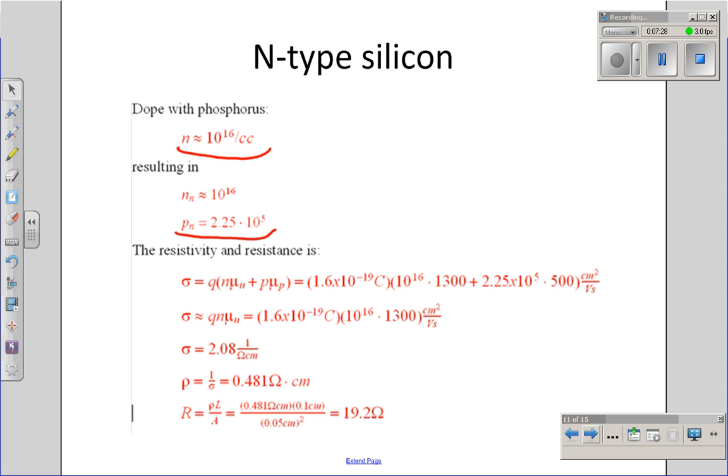Again, using the same calculations as before, if I dope the silicon with 10 to the 16th atoms of phosphorus per cubic centimeter, the resistivity drops to 0.481, and the resistance is 19.2 ohms. If you recall, for P-type material, the resistance was 50 ohms. N-type material with the same doping was 19 ohms. N-type material has slightly less resistance than P-type material. That doesn't really matter, however, because you can adjust for that just by changing the doping concentrations.